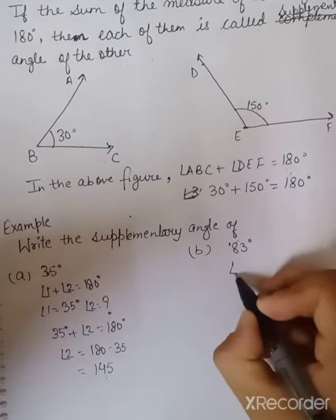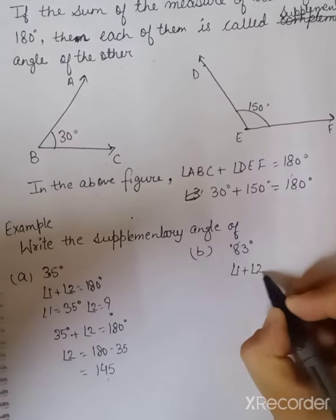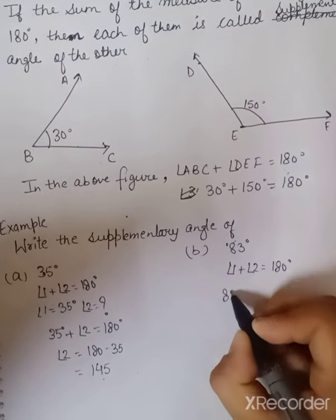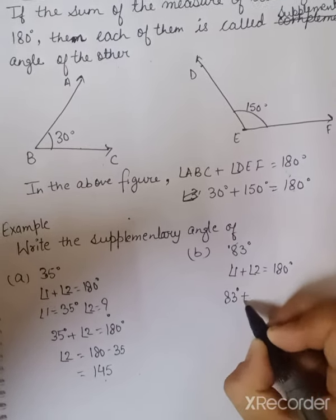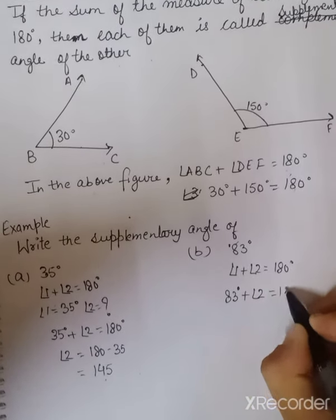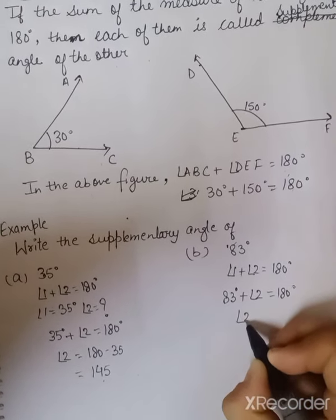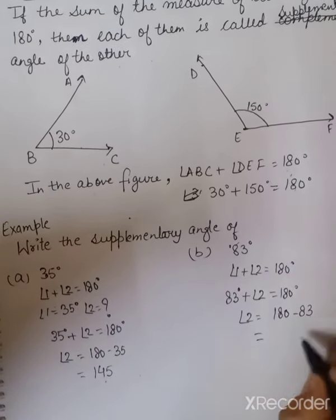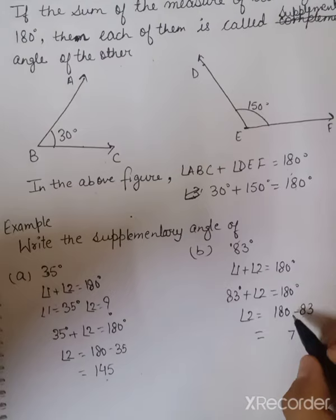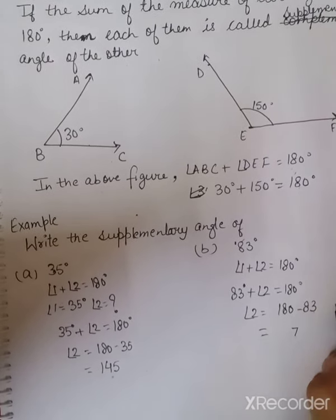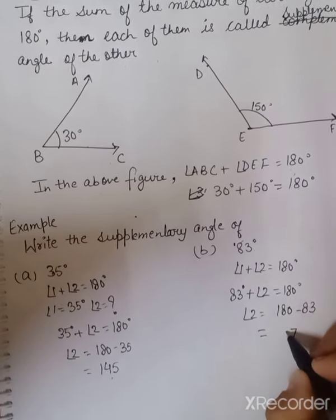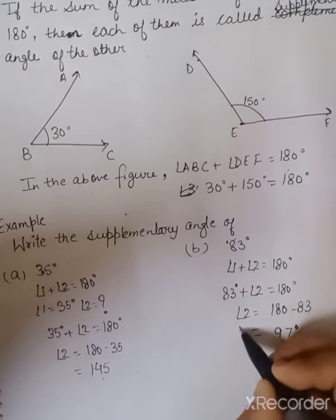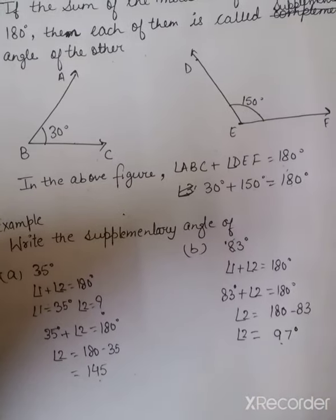Likewise, for 83 degrees: angle 1 plus angle 2 equals 180 degrees. We know that angle 1 is 83 degrees, and we don't know angle 2. We will deduct 180 minus 83. The answer is 97 degrees. When we add 83 and 97, we get 180 degrees.